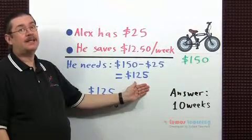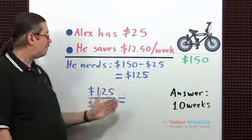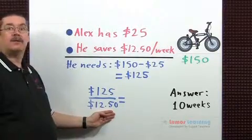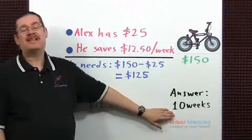To find the number of weeks it takes to save this money, divide this by $12.50. When you do that, you get the answer of 10 weeks.